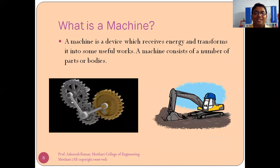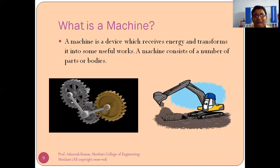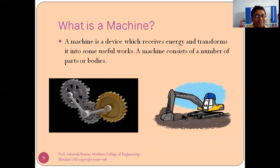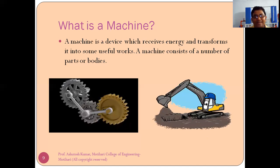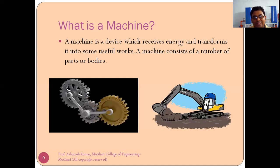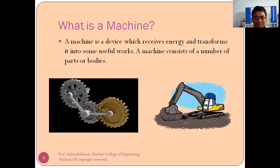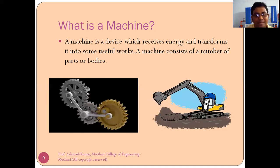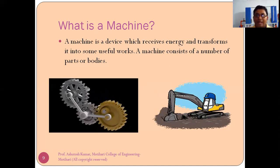What is a machine? All of you must know — every day we encounter machines, everything around us is a machine. But here we will look at a more technical definition. A machine is a device which receives energy and transforms it into some useful work. A machine consists of a number of parts or bodies.